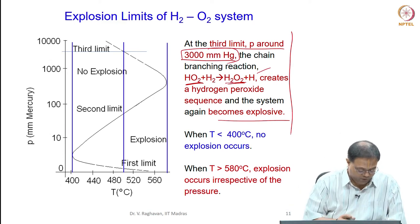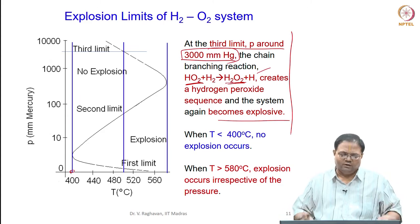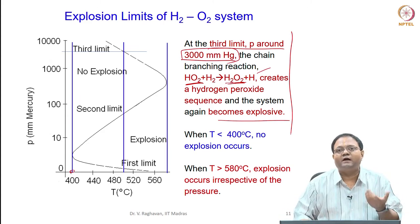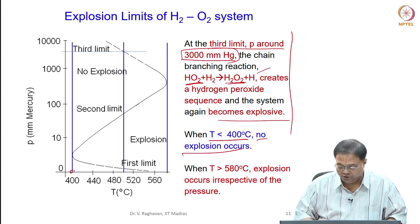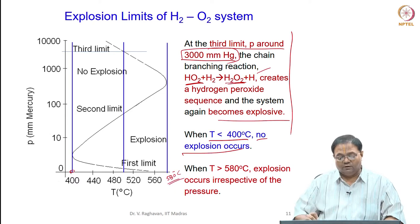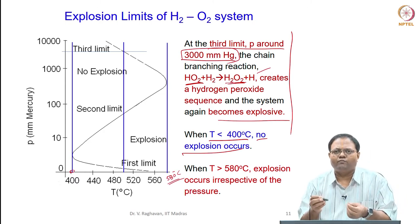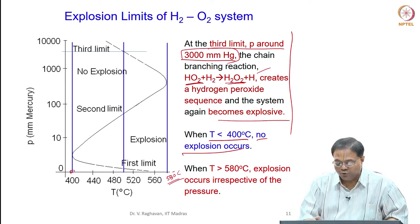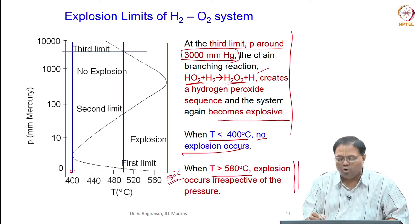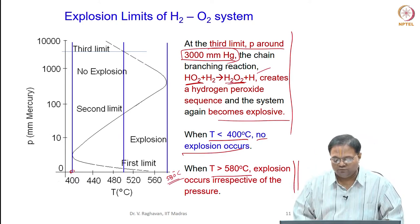When the temperature is below approximately 400 degrees, there is no explosion irrespective of whatever the pressure is, because the temperature is not enough to trigger the reaction. Less than 400 degrees temperature - no explosion occurs irrespective of pressure. Similarly, when the temperature is more than about 580 degrees centigrade, even at low pressure you will see explosion. A flammable quantity of hydrogen and oxygen will just ignite, and at almost all pressures you can see that this temperature will provide explosion.